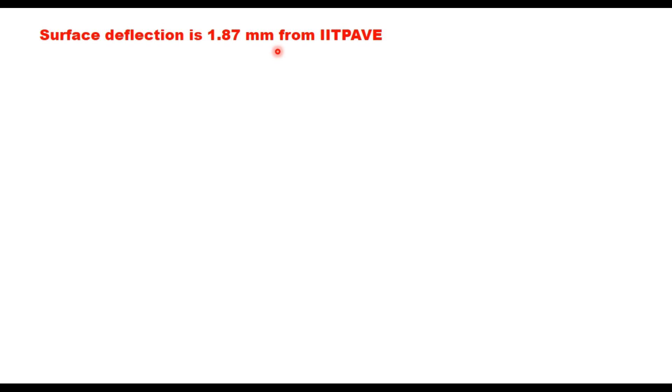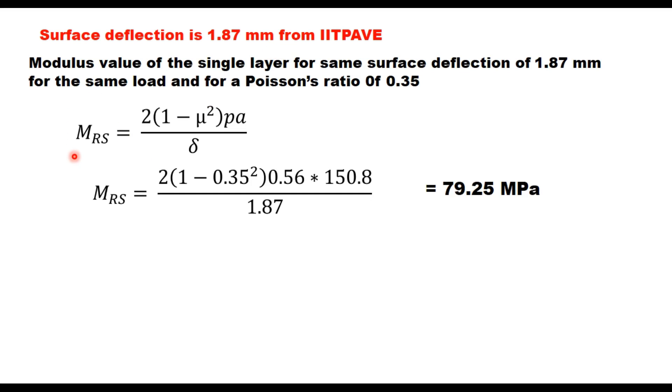Now for this deflection, what is the equivalent value of MRS for a single layer structure? And you use this equation here. Delta is 1.87 and all remaining values are same as we have taken earlier: μ 0.35, P 0.56, A 150.8, and you get MR value of a single layer which is equivalent layer, 79.25 MPa. And using this you can calculate what is the effective CBR. Use this equation: MRS = 17.6 × CBR raised to the power 0.64. MRS is 79.25 and you get a value of CBR 10.5%. That is the effective CBR of that four layer construction which we made in field.